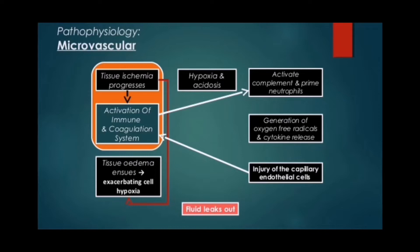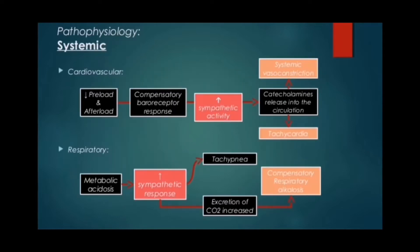Hypoxia and acidosis activate complement and prime neutrophils, resulting in generation of oxygen free radicals and cytokine release. These mechanisms lead to injury of the capillary endothelial cells, which in turn further activates the immune and coagulation systems. Damaged endothelium loses its integrity and becomes leaky. Spaces between endothelial cells allow fluid to leak out, causing tissue edema and exaggerated cellular hypoxia.